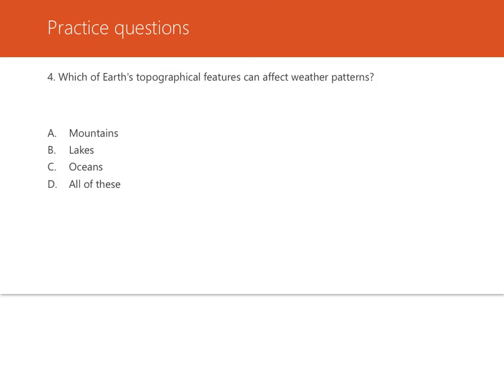Number four, which of Earth's topographical features can affect weather patterns? Would it be mountains, lakes, oceans, or all of these? Which ones could affect weather patterns? It's going to be all of these. All of these features can affect weather patterns. Oceans and lakes help to keep temperatures on the nearby land more constant, like we talked about. They also increase the amount of moisture in the air. And mountains can affect weather, too. Air-carrying water vapor travels over mountains, but as the air is forced up over the tops of the mountains, the air cools. And this causes the water vapor to condense and form clouds, and moisture from the clouds precipitates. And then the drier air then travels over the mountain tops and down the other side.